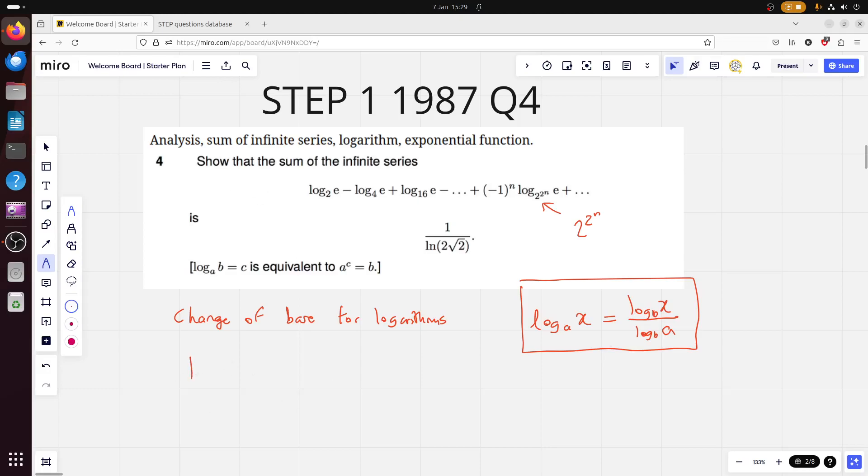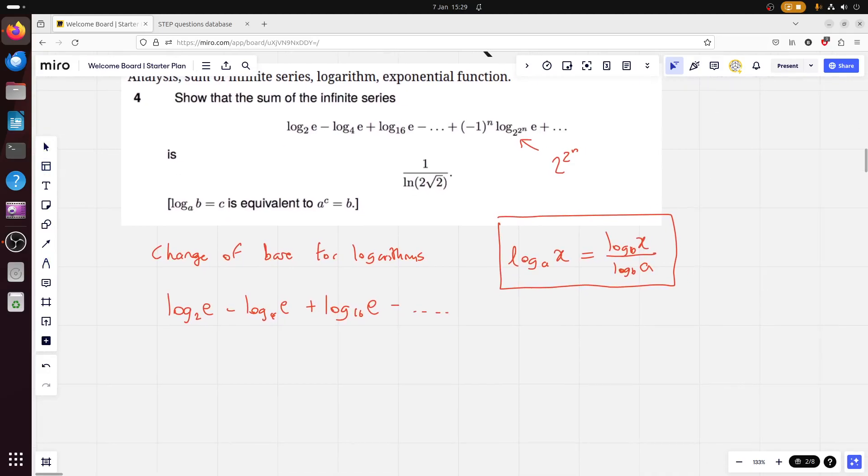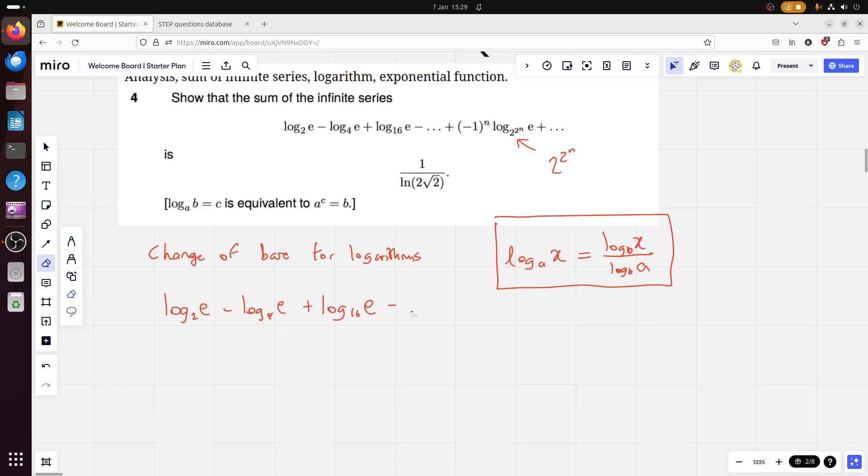Change of base for logarithms. I've used this in several videos now, and I think I've proved it in some of those videos as well. Log base a to the x is log base b to the x over log base b to the a. Just remember the one which is bigger goes on top, the one which is smaller goes on the bottom, and then you can change the base. This is almost like a law for dividing logarithms. So, OK, we've got this, and that's what I'm going to use to do this question.